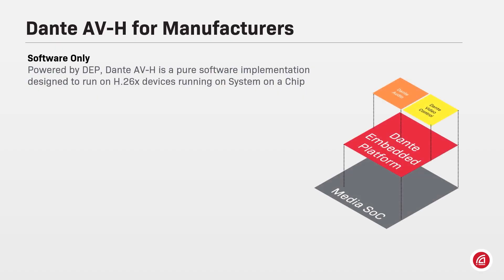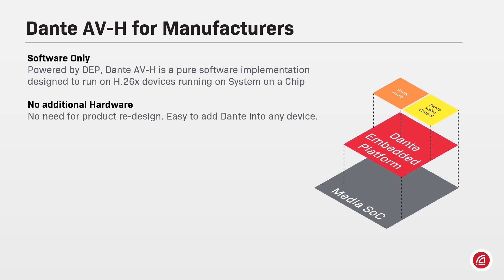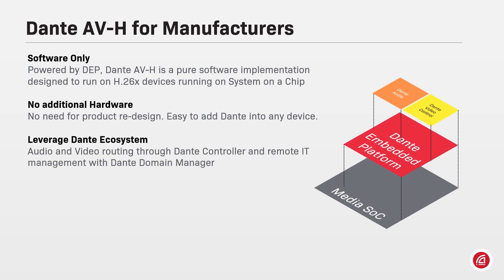Dante AVH is designed to work with systems on a chip running 32 or 64-bit ARM-based processors. The implementation is simple and straightforward, enabling Dante AV features into H.264 and H.265 cameras, video encoders and decoders. By adopting Dante AV features, all products can leverage the huge Dante ecosystem, having their audio and video channels routable through Dante Controller and remote IT management with Dante Domain Manager.